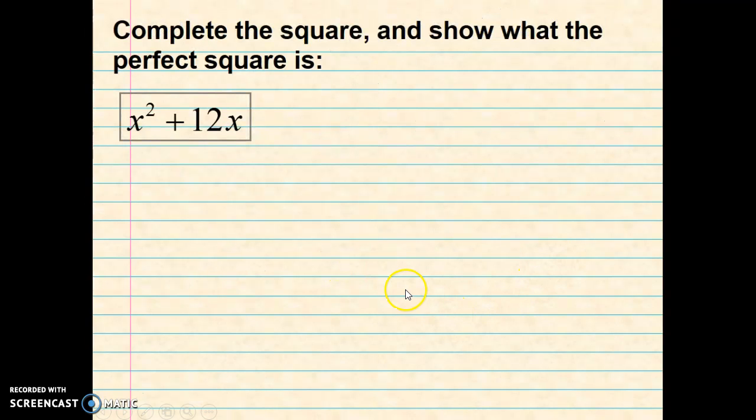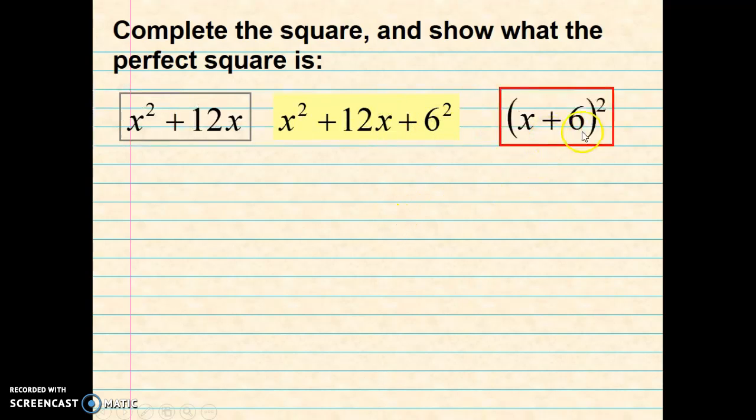Okay, so let's try some examples. x squared plus 12x. We want to complete the square and show its factored form. So half of B would be 6. We're going to square that and add it to the end. So that gives us x squared plus 12x plus 6 squared. Notice I didn't write 36 here only because I want to write it in its factored form, which equals x plus 6 squared. Notice the 6 follows the 6 here and the plus sign follows the plus sign on the B term.